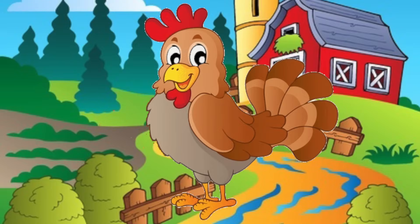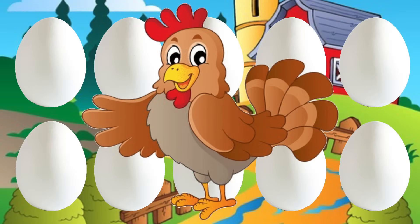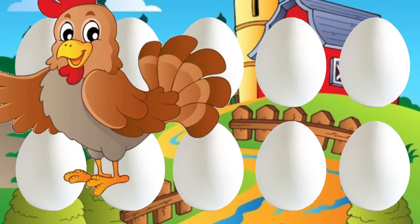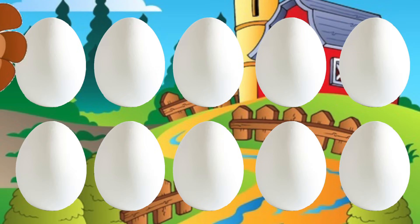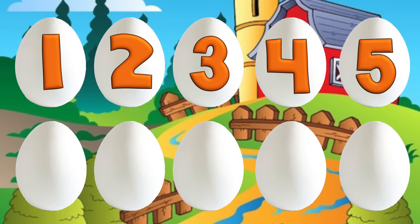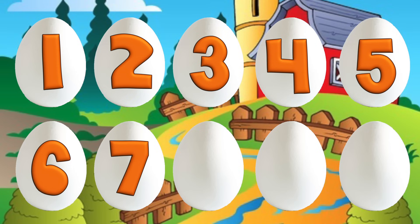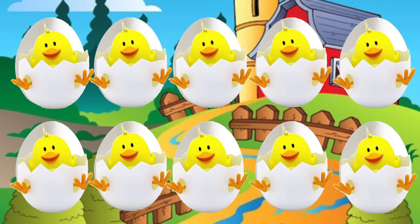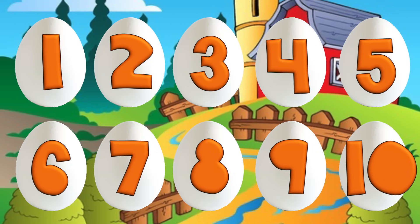There was a hen who laid some eggs. Can you help and count them? One, two, three, four, five, six, seven, eight, nine, ten. Chicken jigs hatching from ten hen eggs laid by hens.